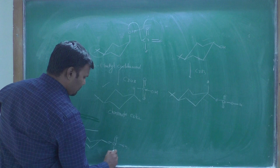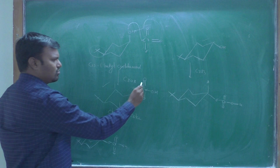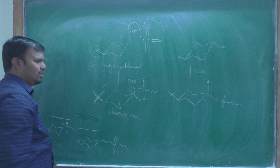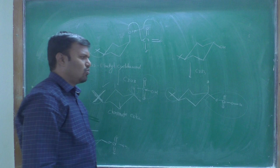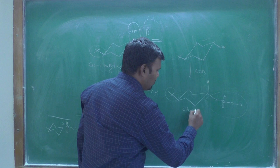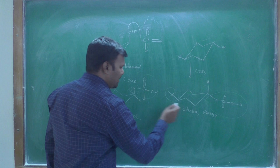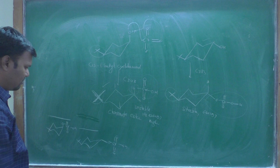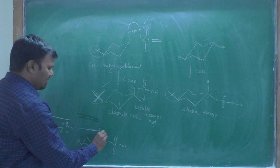The energy of the axial chromate ester is higher than the energy of the equatorial chromate ester because the axial isomer has 1,3-diaxial interactions, and additionally the bulky tert-butyl group is on the same side as the axial chromate ester. In the equatorial case, the tert-butyl group and the chromate ester are away from each other, making it more stable with lower energy.